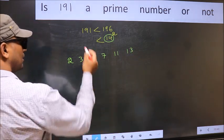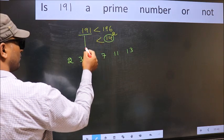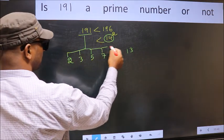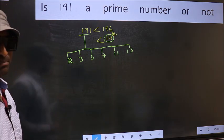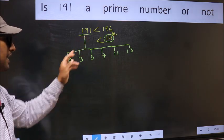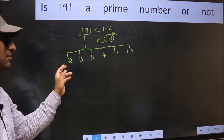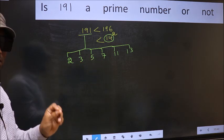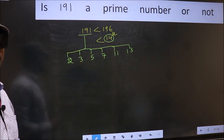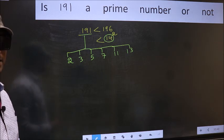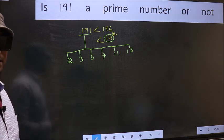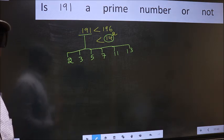Now for the given number, we should check divisibility by all these numbers. If the given number is divisible by any one of these numbers, we say it is not a prime number. Otherwise, it is a prime number. Did you understand the method? Let us check with the divisibility.